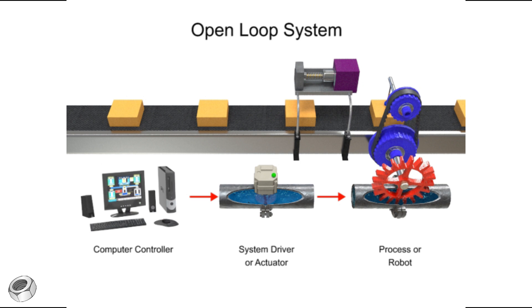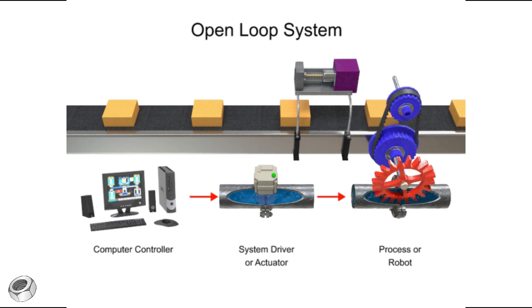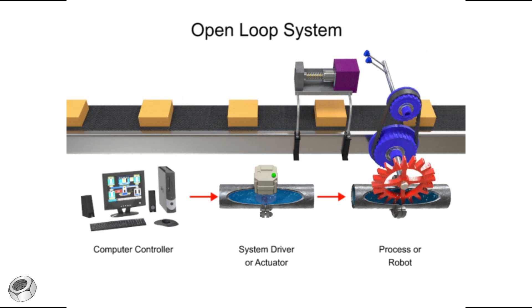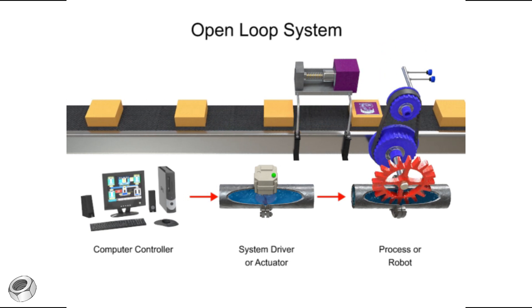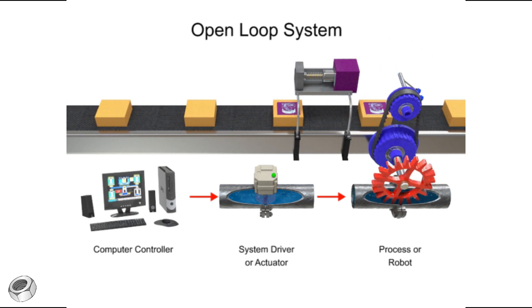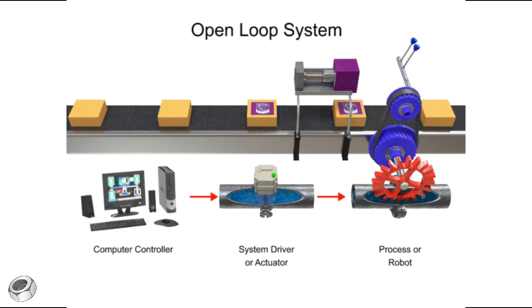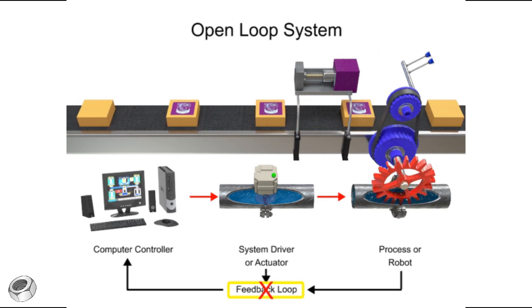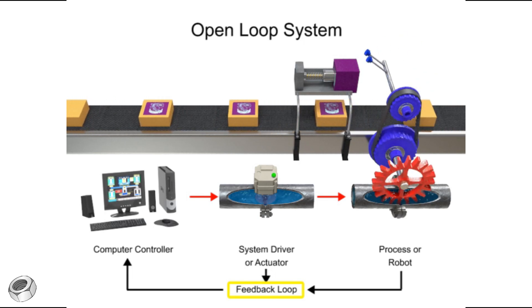For the purposes of this module, we'll focus on robots. Once the signal is received, the robot performs the appropriate action. In an open-loop system, the signals that go from the computer to the system driver to the robot are never checked with a feedback loop to ensure that the robot has completed its task.